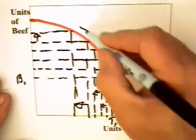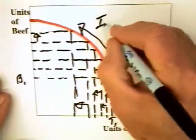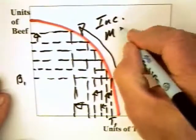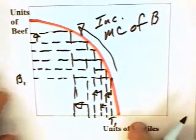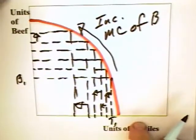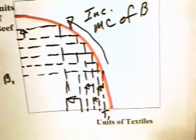So as you move around this curve, there is increasing marginal cost of beef. And that increasing marginal cost of beef is going to restrict the production of beef in trade with China.